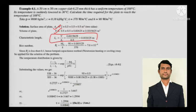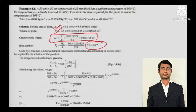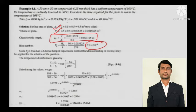The Biot number is the judging factor, so it has to be calculated first. Biot number, as you all know, is HL by K, where L is the characteristic length we have already calculated. The Biot number is 7.6 into 10 to the power minus 4, which is far less than 0.1. So when the Biot number is lesser than 0.1, you need to implement the lumped parameter analysis for this particular question.